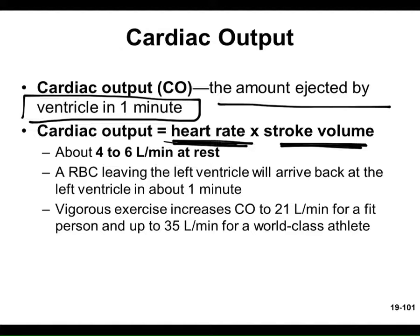A person has about 4 to 6 liters of blood, so essentially your entire blood supply circulates once per minute — your red blood cells complete a full circuit in about a minute. During exercise, the heart beats faster and harder, and cardiac output can rise to 21 liters per minute or even into the mid-30s. Our heart can take on far more work than it does at rest.